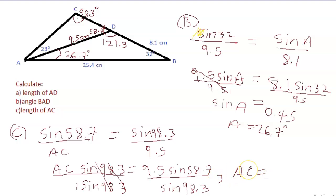AC is equal to 9.5 sine 58.7 divided by sine of 98.3, and we'll end up with 8.2 centimeters. So the length of AC is 8.2 centimeters.